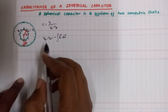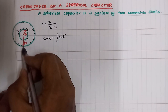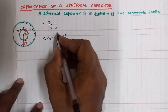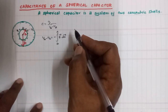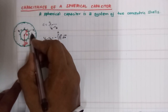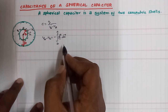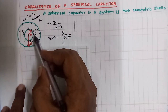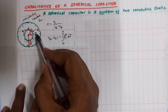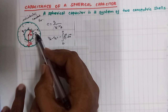We transfer the charge from a distance b to a distance a. We will use the point where we are considering the distance x. Therefore, there is an electric field for the inner shell with positive charge.